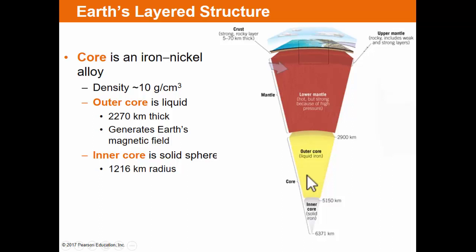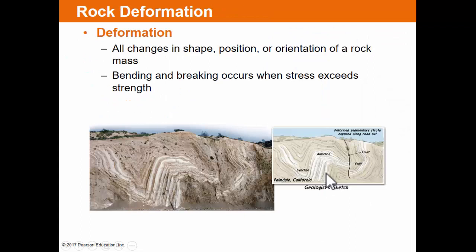As tectonic or lithospheric plates move around the globe — past, toward, and away from each other — they cause the rock along their margins to be pushed on, pulled apart, or ground past each other. All of this leads to deformation — all changes in shape, position, or orientation of rock. Bending and breaking occur when stress exceeds the strength of the rock. You can push on a rock and it may remain solid, but when the chemical bonds are broken or stretched, you get either bending — shown as synclines and anticlines — or breaking of the rock, resulting in fracturing or faulting.